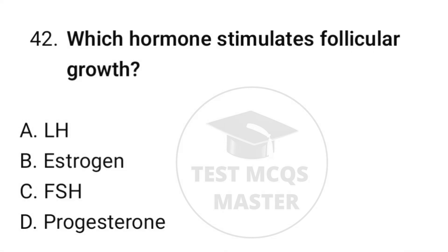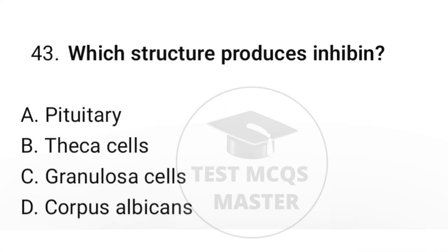Question number forty-two: which hormone stimulates follicular growth? The correct option is C, FSH. Question number forty-three: which structure produces inhibin? The correct option is C, granulosa cells.